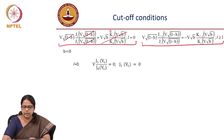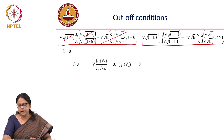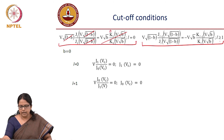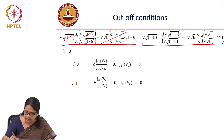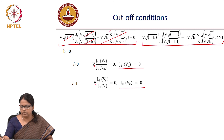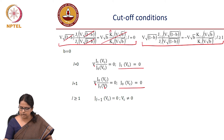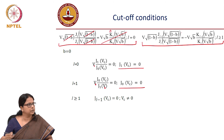For L equal to 1, you use the corresponding equations. The cutoff condition becomes J0(V_c) divided by J1(V_c) equals 0, because L equals 1 means J0 in the numerator and J1 in the denominator — so J0(V_c) must equal 0. The cutoff condition for L greater than or equal to 1 mode is similarly J_{L-1}(V_c) equal to 0. Of course, V_c equal to 0 is not accepted because of the specific nature of this equation.